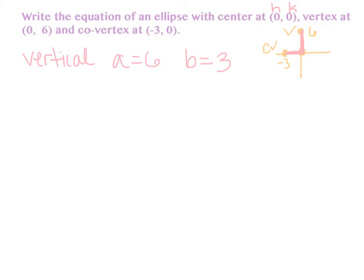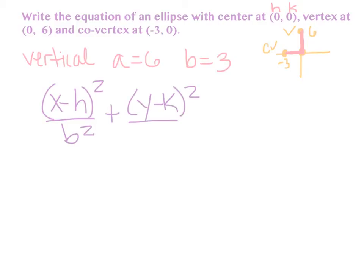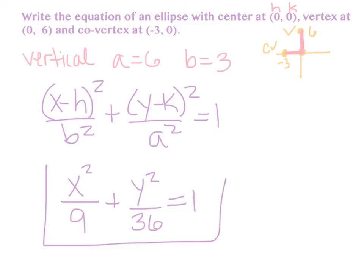For a vertical ellipse, the equation is X minus H squared over B squared plus Y minus K squared over A squared equals 1. Filling in: H is 0, so that's just X squared; B is 3, so over 9. Then Y minus K — K is 0 — so Y squared over 6 squared, which is 36, equals 1. When you have these word problems, draw a little picture using the information they give you, because then you can determine the letters you need to fill in the equation.